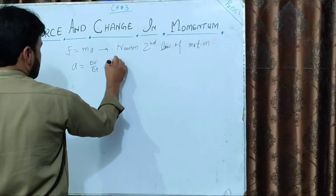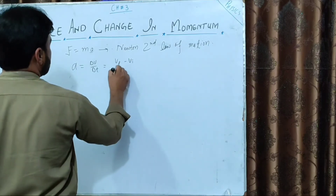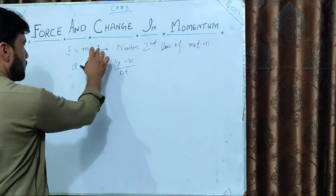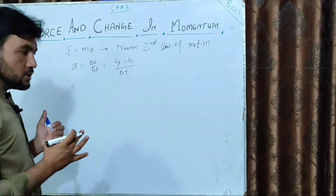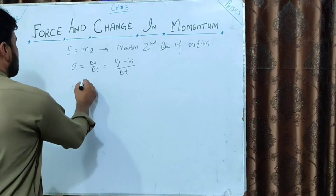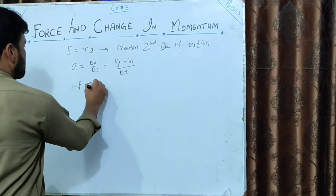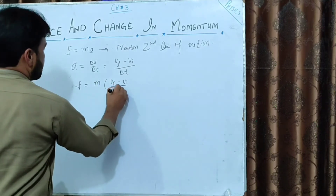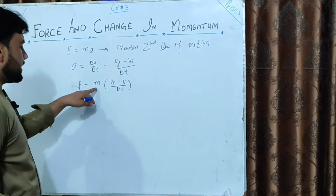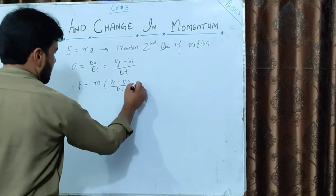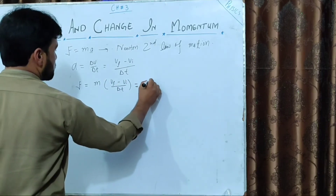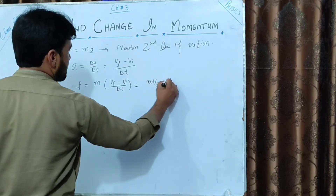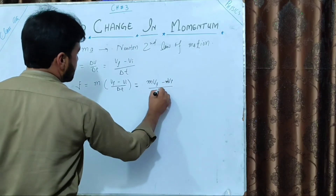Delta V is the final velocity minus the initial velocity, divided by delta T. Substituting into Newton's second law, the force is equal to M times VF minus VI, divided by delta T. The quantity M is then distributed, giving MVF minus MVi, divided by delta T.